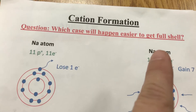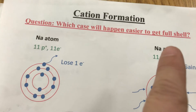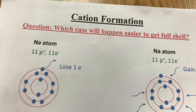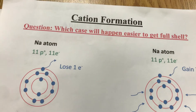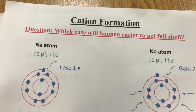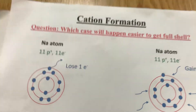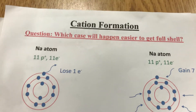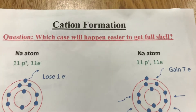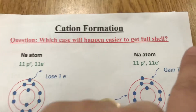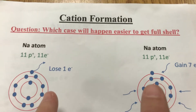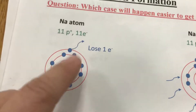Now since they need to follow the octet rule, that means they want to get eight valence electrons to get a full shell, because they want to get to the noble gas state. So how do they get eight valence electrons? There are two critical questions you always want to ask yourself: lose how many electrons, and gain how many electrons? Then you compare the two cases — which case will take place easier.